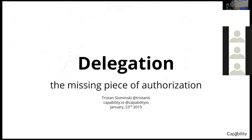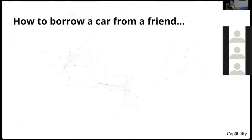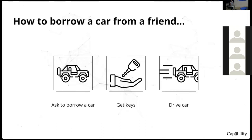In order to set the stage, I want to highlight something that we all take for granted that is kind of actually weird — the way we do it in the physical world versus the way we do it online. As an example, I want to go through how to borrow a car from a friend, and it's as straightforward as you believe: you ask to borrow a car, you get the keys, and then you get in the car and you drive it away. That's typically how we do things in the physical world.